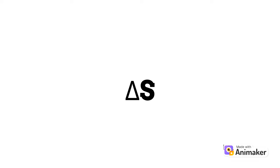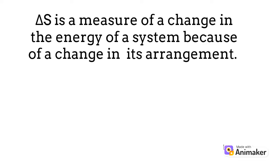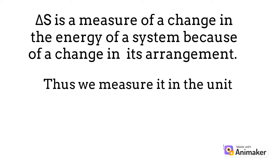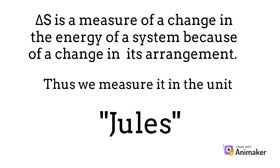In chemistry and physics, we use the symbol delta S to measure entropy. Delta S is a measure of the change in energy of a system because of a change in the system's arrangement. This is energy, so we measure it in the same unit: joules.